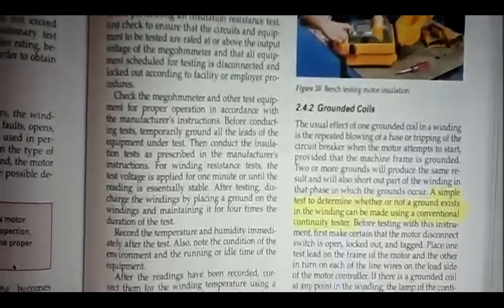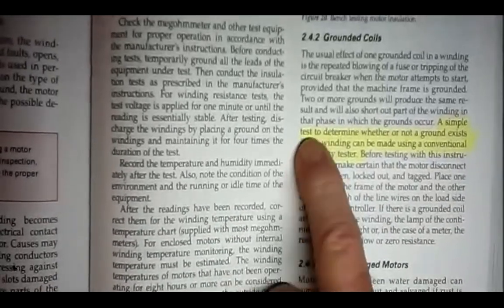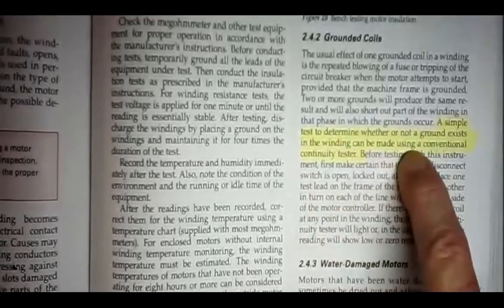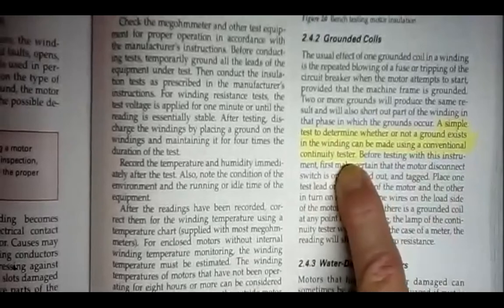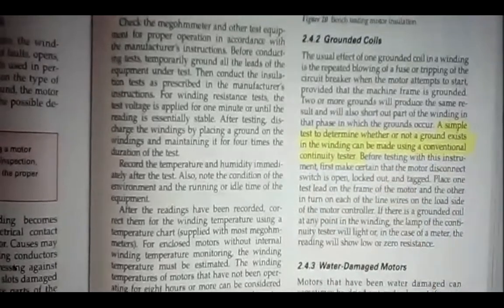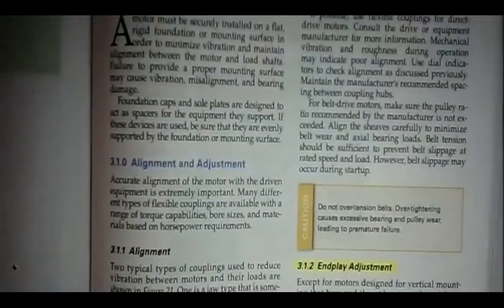Grounded coils. On page 23 on the right-hand column, grounded coils. A simple test to determine whether or not a ground exists in the windings can be made using a conventional continuity tester. So, just go from the windings to the frame of the motor and see if you get continuity.